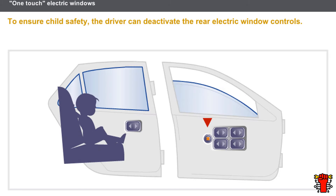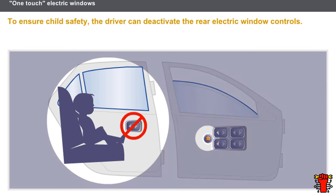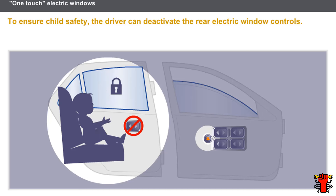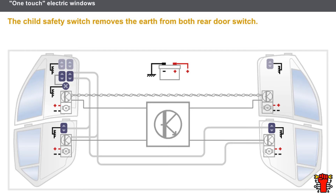To ensure child safety, the driver can deactivate the rear electric window controls. The driver presses an inhibition switch, which stops the rear electric window switches from working. The rear electric windows can still be controlled using the driver's switch. The inhibition switch tells the UCH that the rear switches must be deactivated, and the UCH cuts the power supply to the rear switches.